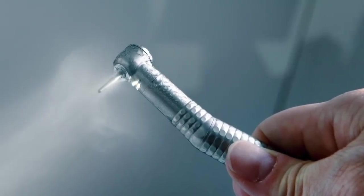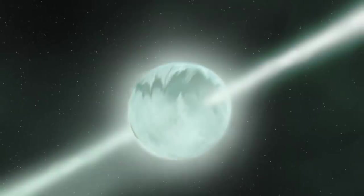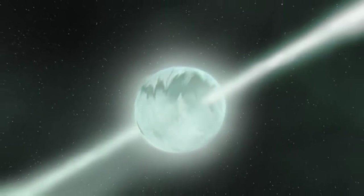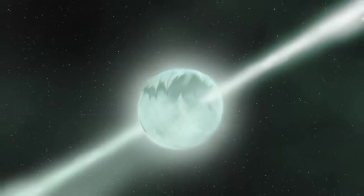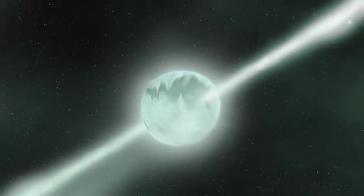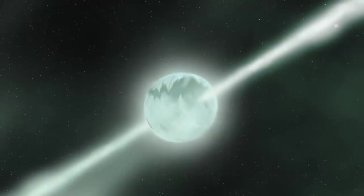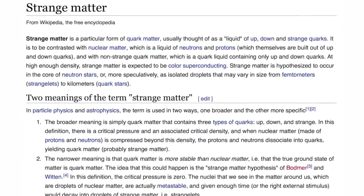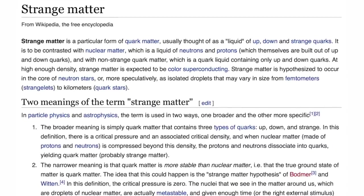It was in the tens of thousands of RPM. And so they said, well, that's strange matter then. And so they came up with a new hypothesis to take the place of the old hypothesis. The old hypothesis, the neutron star, is wrong. But this now replacement hypothesis of strange matter is also wrong.